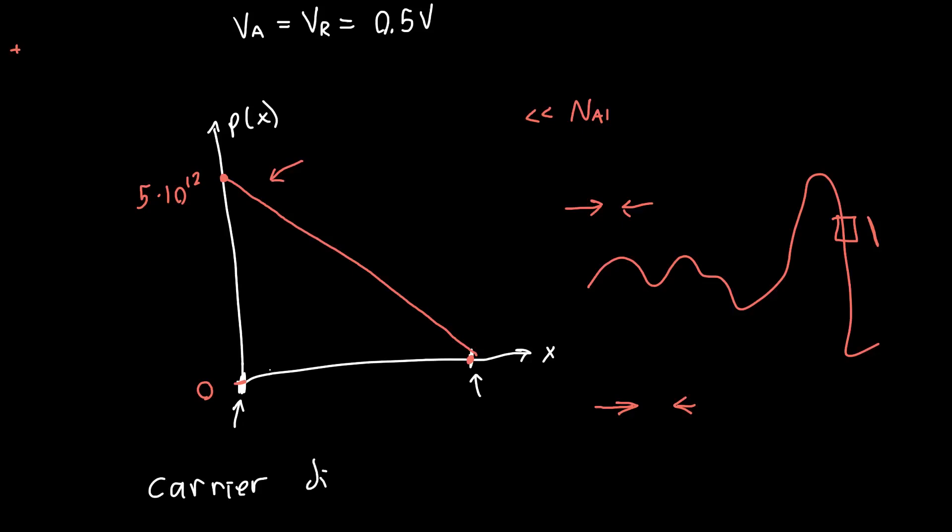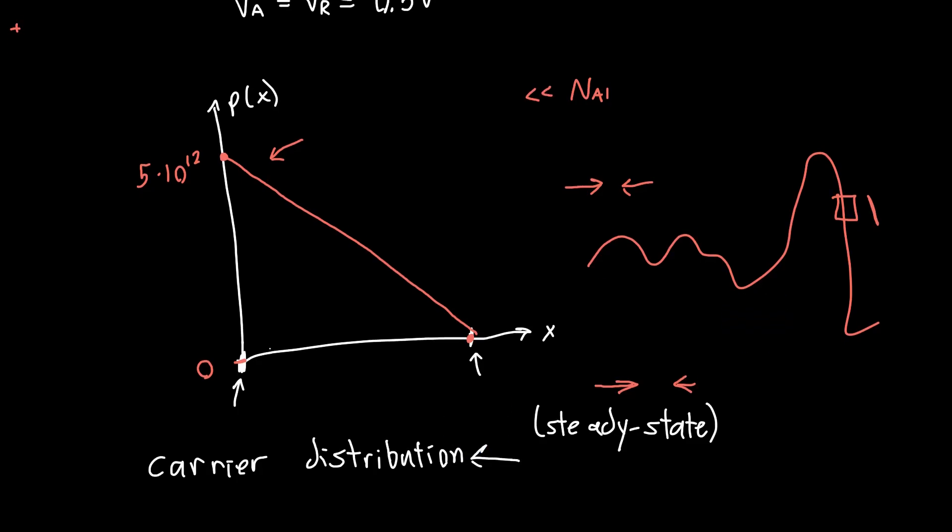And I should say implicitly, this is at steady state. So this is at steady state after the system has had a long time to equilibrate. We know the carrier distribution now everywhere within our system, which means we can calculate the current. And so in the next video, we're going to actually calculate what this current will be for this transistor. And we're going to re-examine this assumption of this straight line approximation.